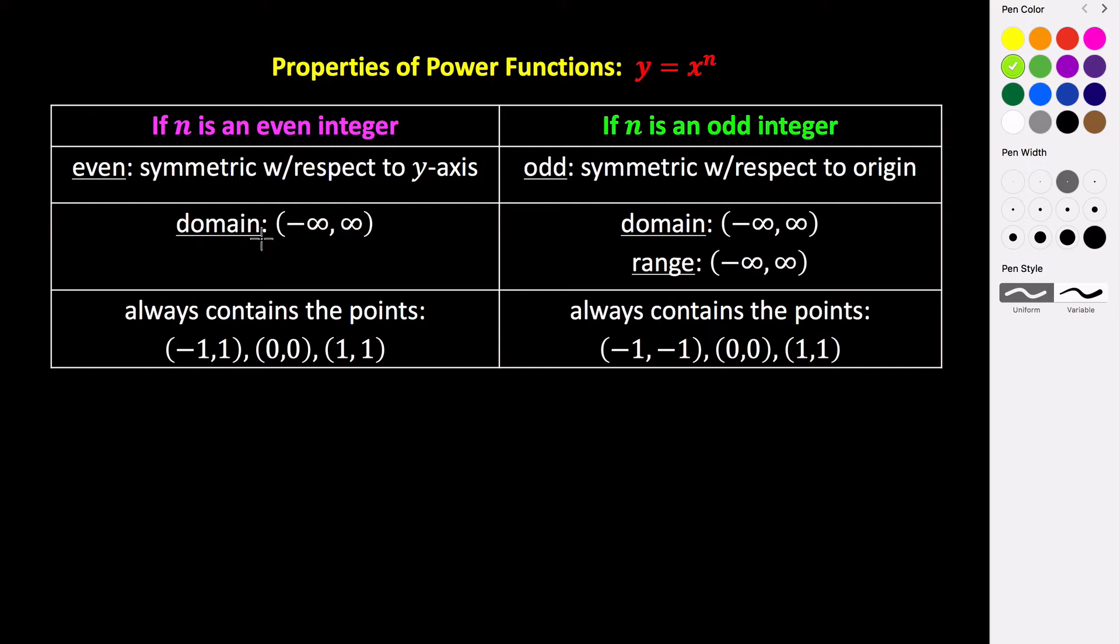The domain of this function is going to be from negative infinity to infinity, so it's all real numbers, and all even power functions contain the points (-1,1), (0,0), and (1,1).